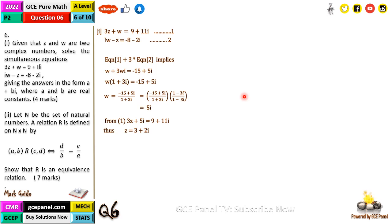First of all, what is an equivalence relation? A relation is said to be an equivalence relation if it is reflexive, symmetric, and transitive. If any one of these three properties fails, then the relation is not an equivalence relation.